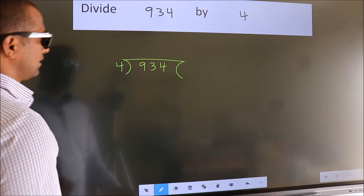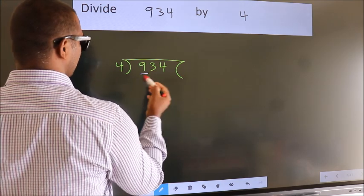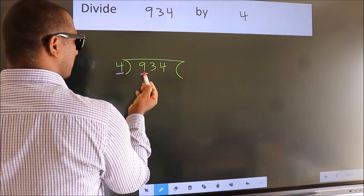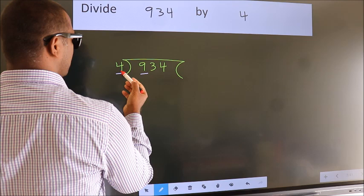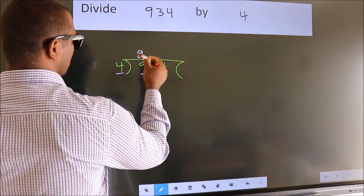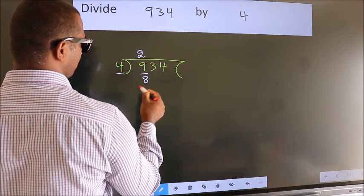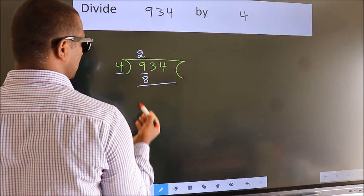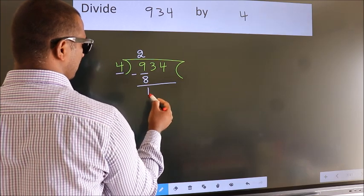Next. Here we have 9, here 4. A number close to 9 in 4 table is 4 2s 8. Now we should subtract. We get 1.